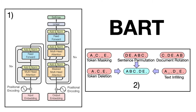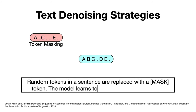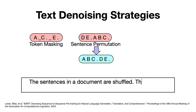Now let's dig a little bit deeper into the types of text corruptions used in BART. The first method is token masking, where, similar to BERT, random tokens in a sentence are replaced with a mask token. Then the model learns to predict the original tokens. The second method employed in pre-training BART is sentence permutation, where the sentences in a document are shuffled and the model is tasked with reordering them. This helps the model understand the logical flow of a document, which could improve its ability to handle tasks like summarization and question answering.